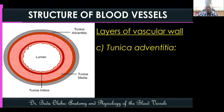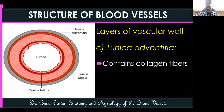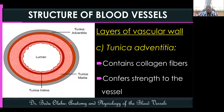The outermost layer is called the tunica adventitia, also known as tunica externa. It contains collagen fibers whose primary purpose is to confer strength to the vascular wall, maintaining integrity and preventing over-distension of the blood vessel. Abnormal ballooning of a blood vessel is called an aneurysm — this layer actually prevents aneurysm formation.